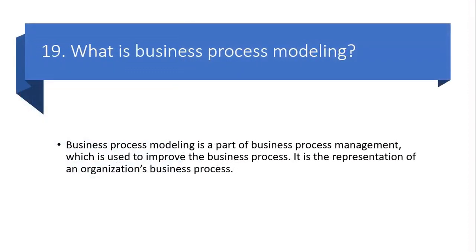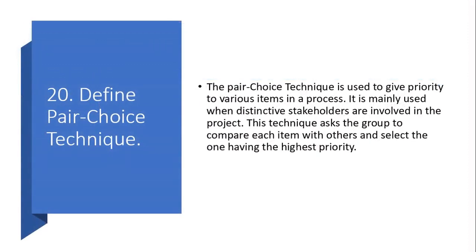Question 19: What is business process modeling? Business process modeling is a part of business process management, used to improve the business process. It is the representation of an organization's business processes. Question 20: Define the pair choice technique. The pair choice technique is used to give priority to various items in a process. It is mainly used when distinctive stakeholders are involved in the project. This technique asks the group to compare each item with others and select the one having the highest priority.